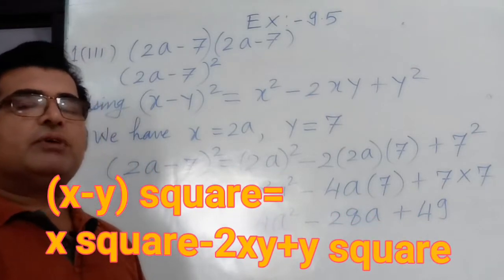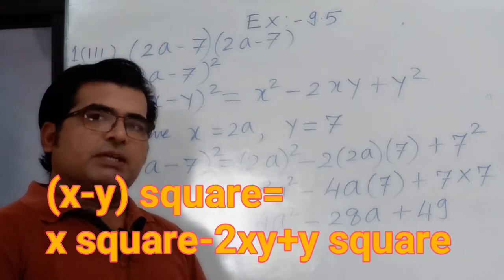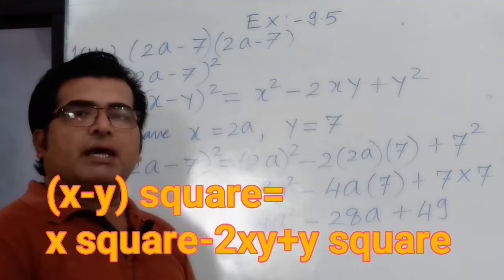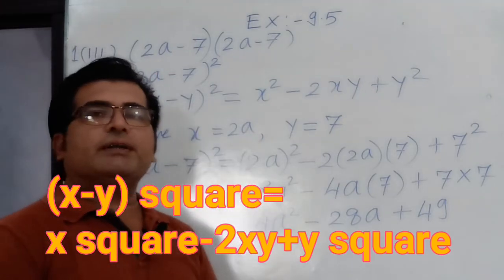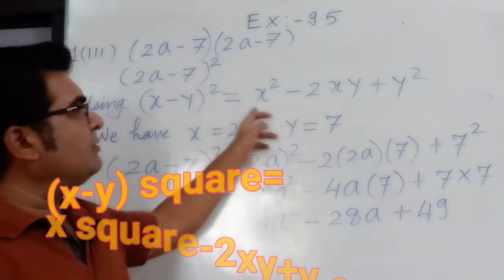You may be thinking we have the identity (a - b) the whole square equals to a square minus 2ab plus b square. That is the same identity we have written in the form of x, y. Why? Because 'a' is present in the sum so it can give confusion, so we have written (x - y) the whole square equal to x square minus 2xy plus y square.